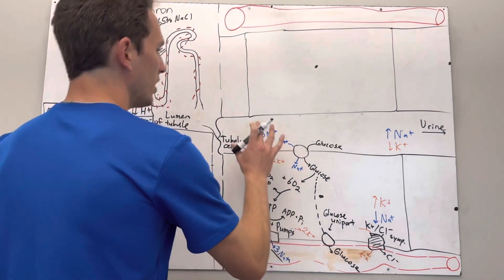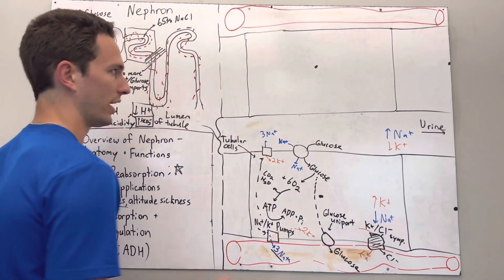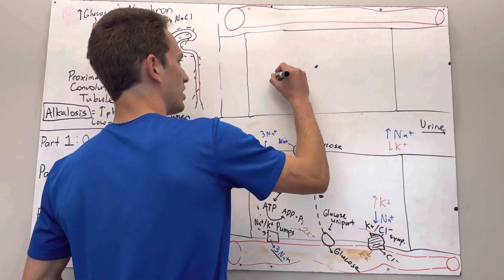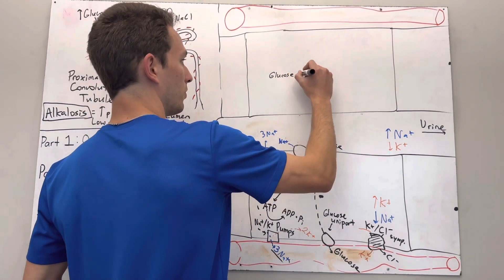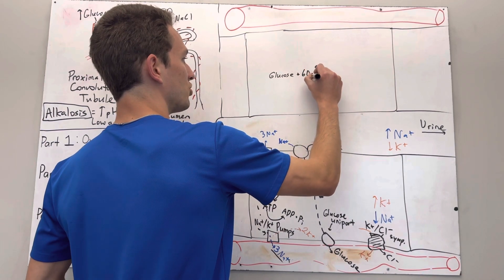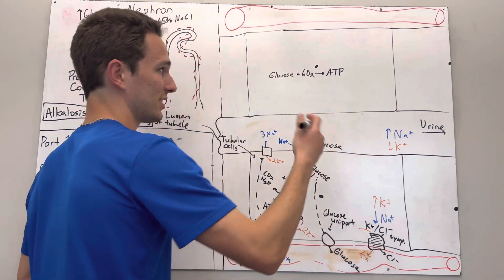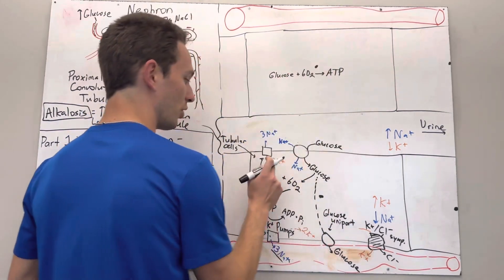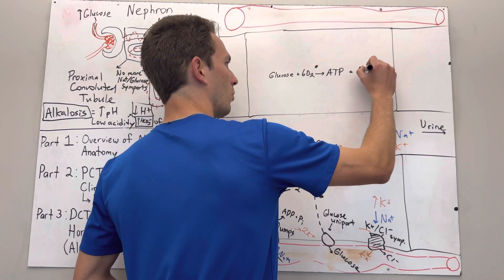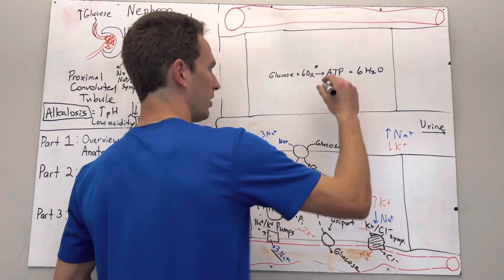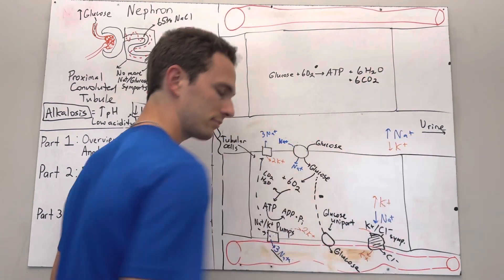So first off in your cells, let's start there. In your cells, we need to be making ATP. So we're going to be doing this equation a lot. Glucose - so we're basically bringing glucose from our food. We're adding it to a lot of oxygen, and we're going to be producing a lot of ATP, something like 32 to 36 ATP that will power those sodium potassium pumps. We're also going to produce a lot of water, so it's about six water. And we're also going to produce six carbon dioxide.